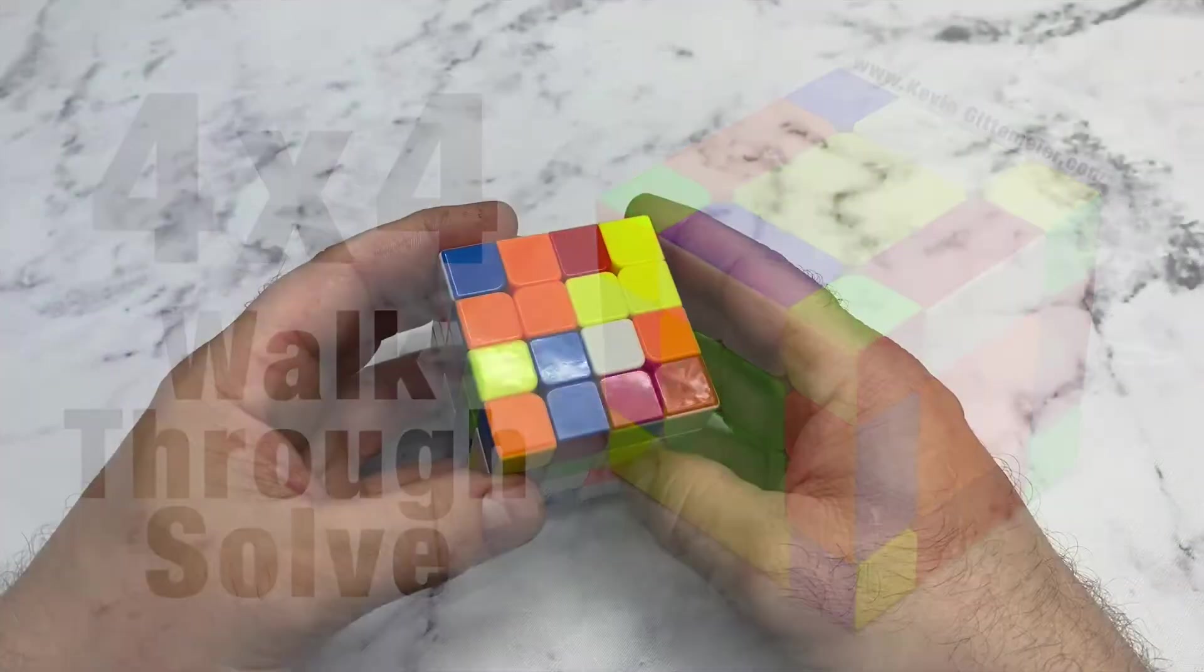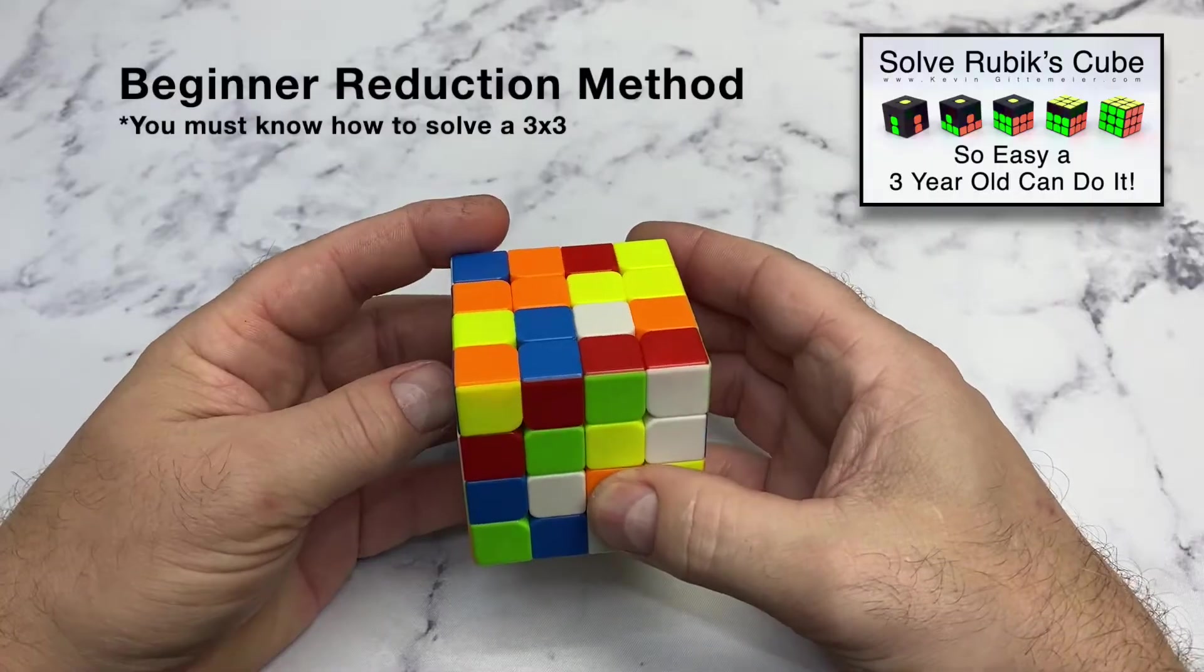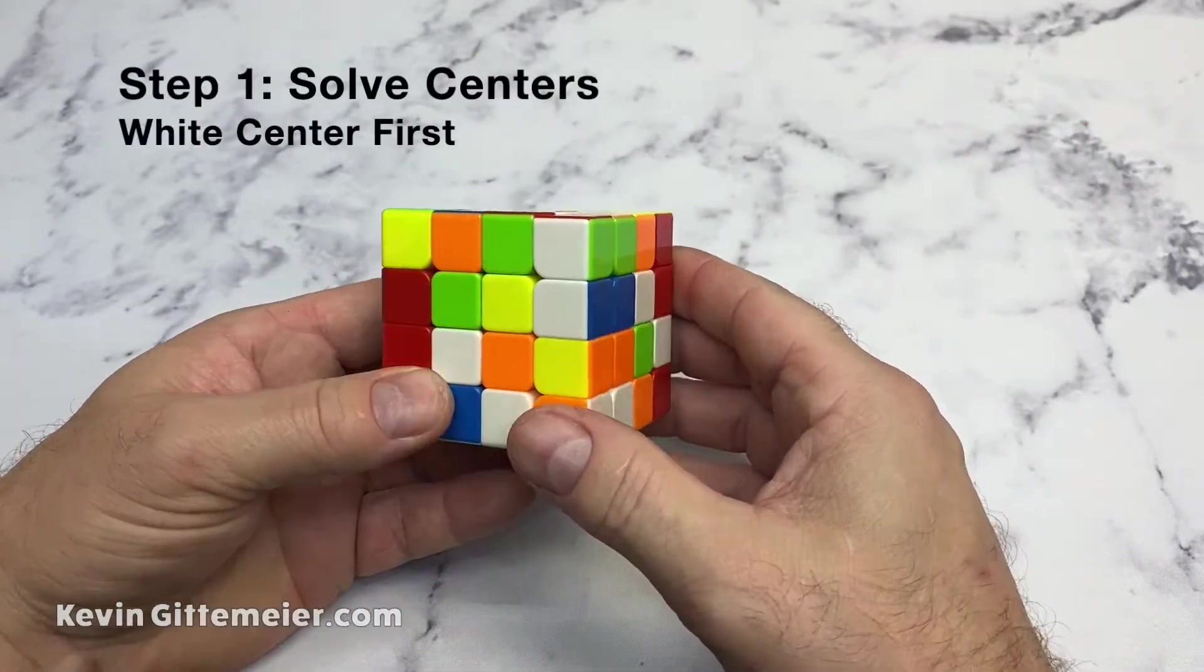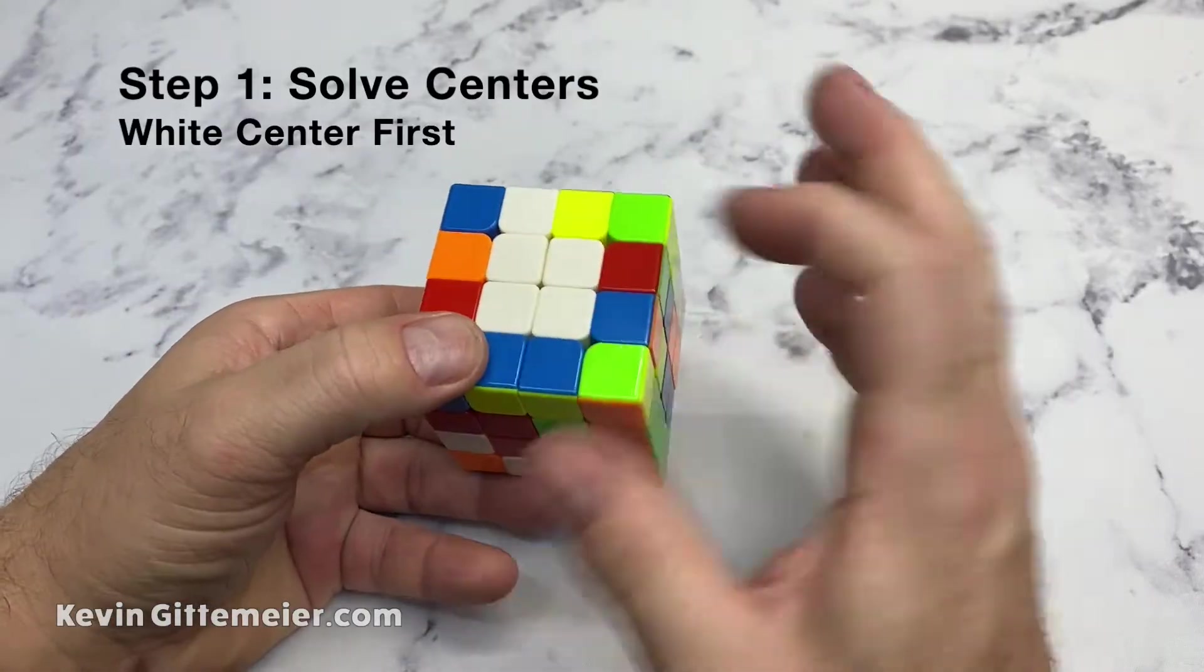All right, I'm going to try to do just a quick example solve of a 4x4 using my method. First, I solve my white center by joining two center pieces to form a bar. Then I form another bar, join these two bars.